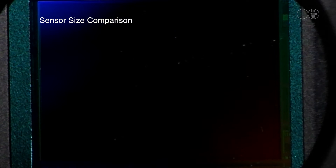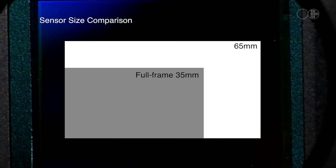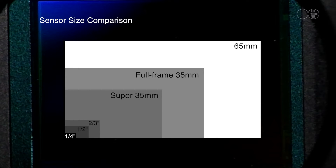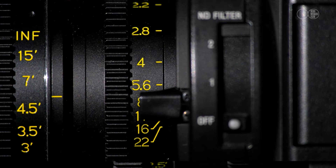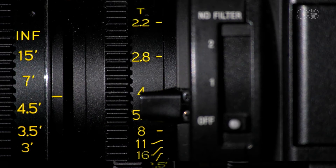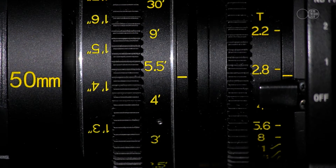The job of the sensor is to turn reality into electronic images. Sensors come in many different sizes, and the size of the sensor has a direct relationship to light sensitivity. Large sensors create a more shallow depth of field. The critical factors affecting depth of field are the aperture setting on the lens, the sensor size, and the chosen focal length of the lens.